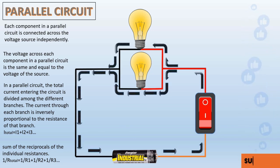In a parallel circuit, the total current entering the circuit is divided among the different branches. The current through each branch is inversely proportional to the resistance of that branch.